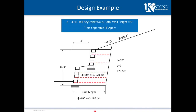Now that we know the basics, let's start the design example. We are analyzing two 4 foot 8 inch tall tiered walls with 8 degree batter, separated 4 feet apart — a 9 foot total tiered wall height. There's a 3 to 1 back slope above the upper tier. The retained and foundation soils are clay, and we're not using cohesion, so c equals 0.